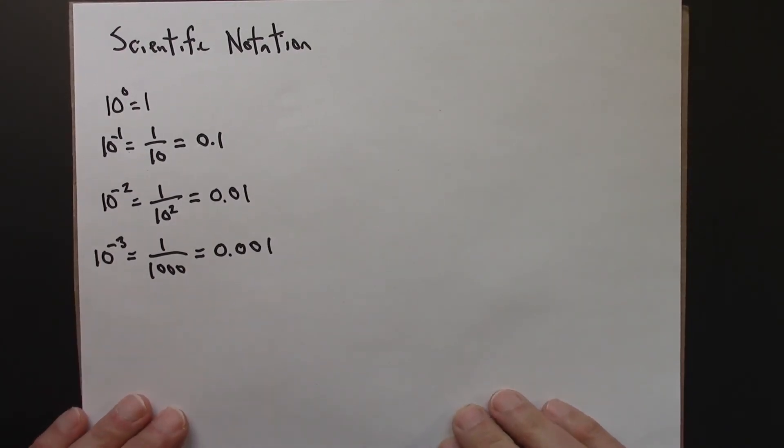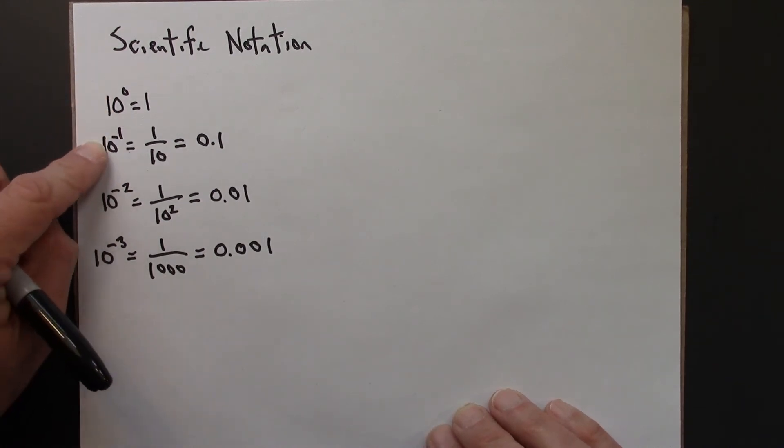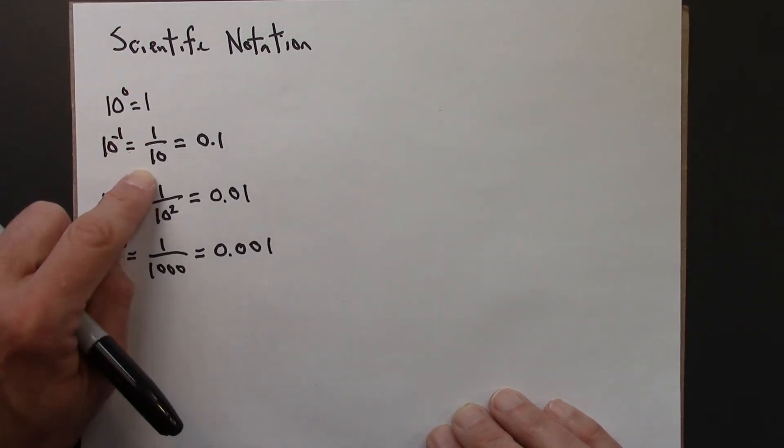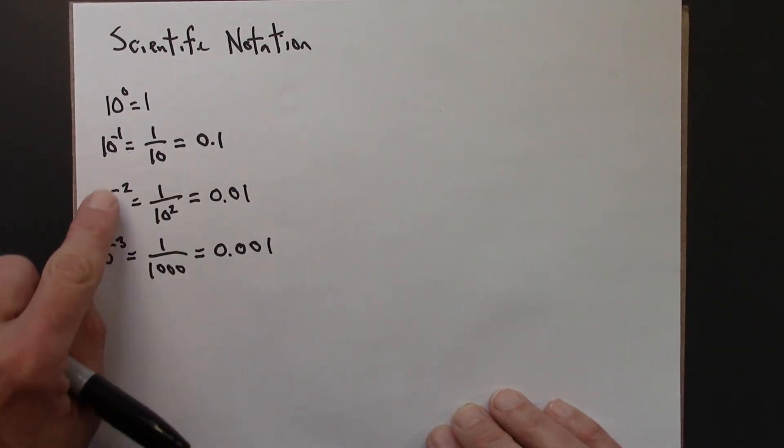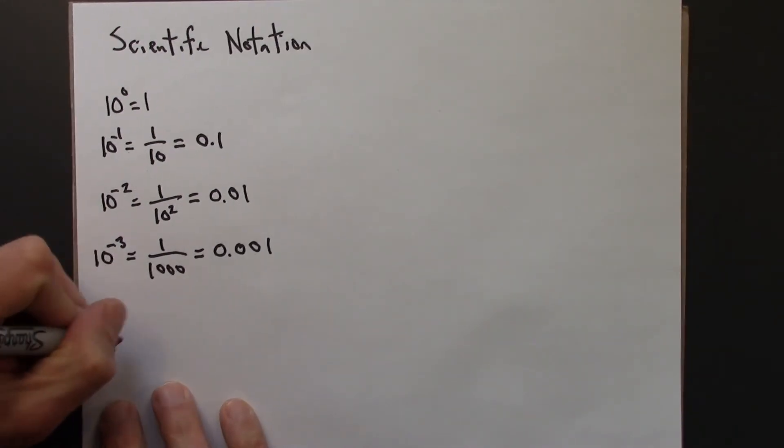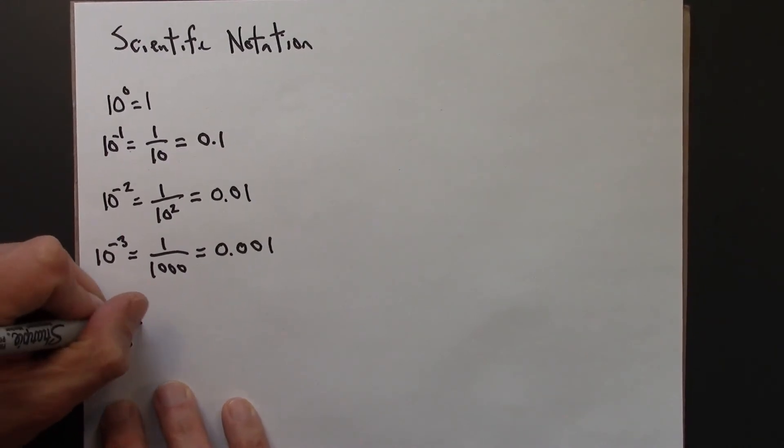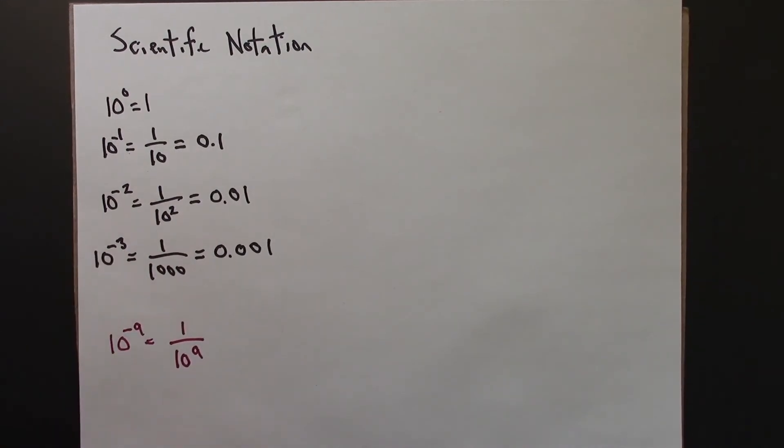Scientific notation is also useful for very small numbers. And here's how to think about that. 10 to the 0 is 1. 10 to the minus 1 is 1 over 10. And 1 over 10 is 0.1. 10 to the minus 2 is 1 over 10 squared. So that's from the general property of exponents. And that 10 to the minus a is the same thing as 1 over 10 to the a. So that's what negative exponents mean.